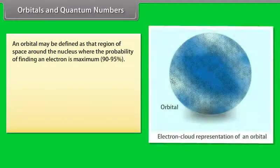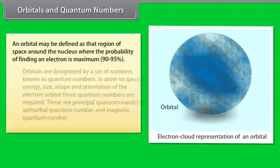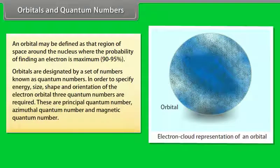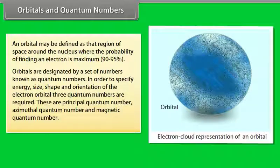An orbital may be defined as that region of space around the nucleus where the probability of finding an electron is maximum. Orbitals are designated by a set of numbers known as quantum numbers. In order to specify the energy, size, shape, and orientation of the electron orbital, three quantum numbers are required: the principal quantum number, the azimuthal quantum number, and the magnetic quantum number.